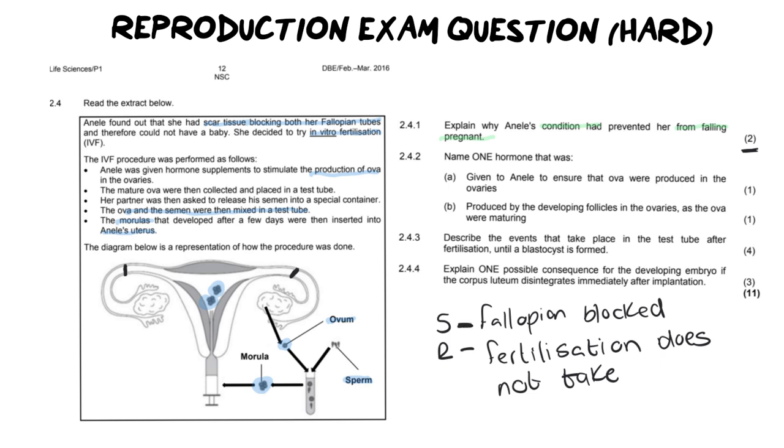But essentially, we need to establish those two things. One, the fallopian tube is blocked and two, fertilization cannot take place. And that's why she cannot fall pregnant. It's pretty simple actually. Just let's not get confused or get caught up on the expectations of the question. Moving on to the next one.